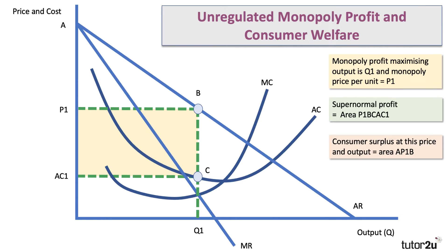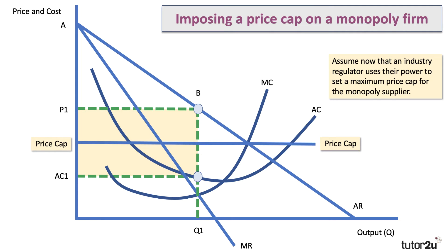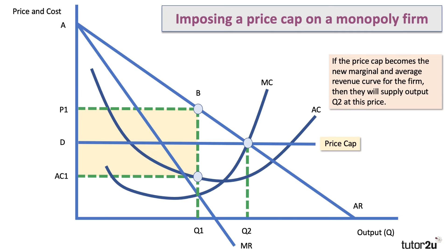This is before we regulate the monopoly. The regulator may decide that the level of supernormal profit is too high — they want to cap the price to control monopoly power and perhaps help consumers. Assume the industry regulator uses their legal power to set a maximum price cap, a price ceiling, for the monopoly supplier. The cap must be set below the monopoly price to be binding and have any effect on the market. We'll label that price D — that's our price cap.